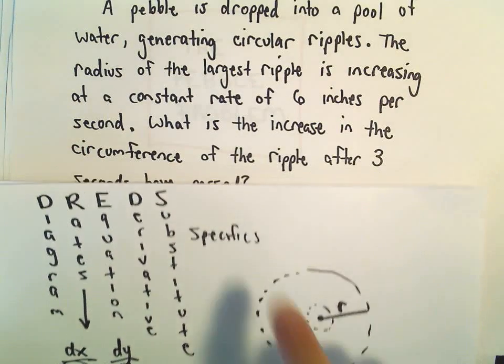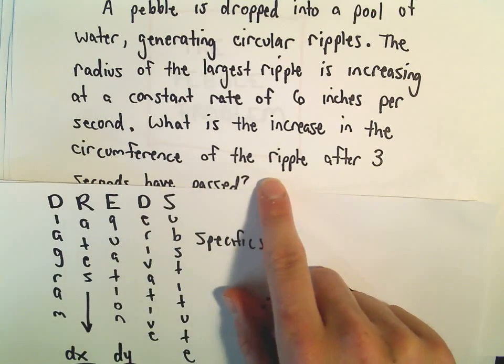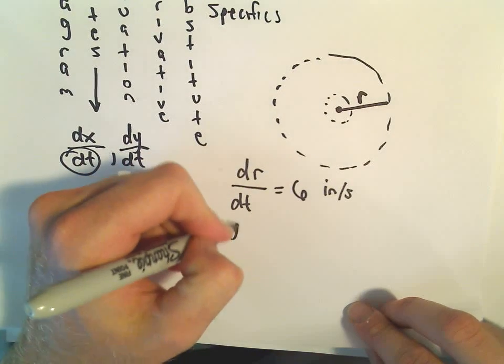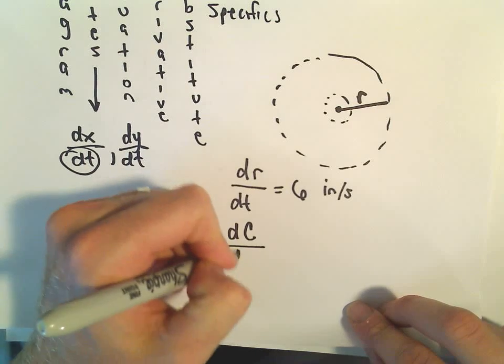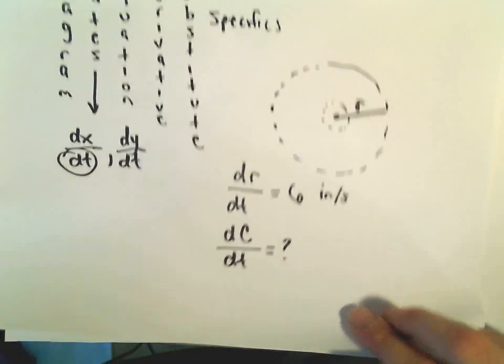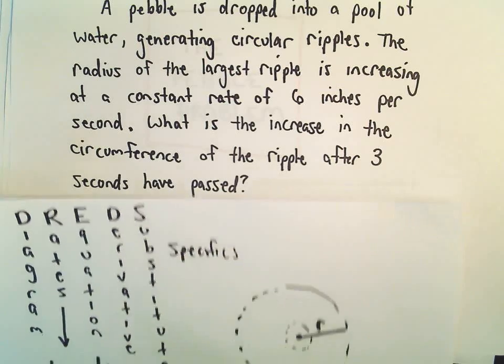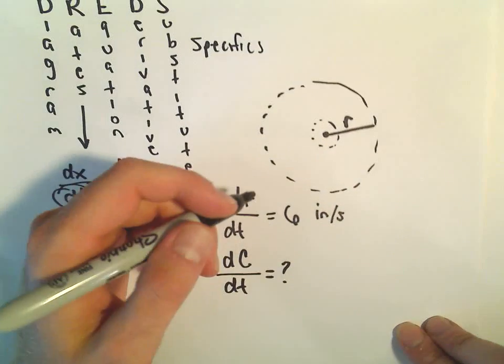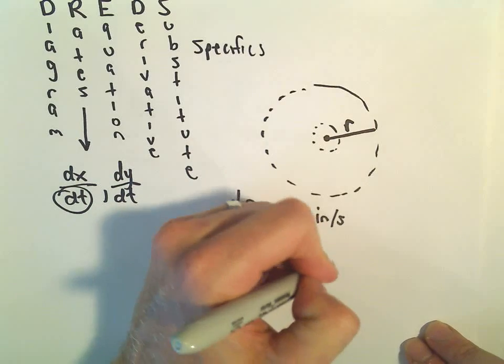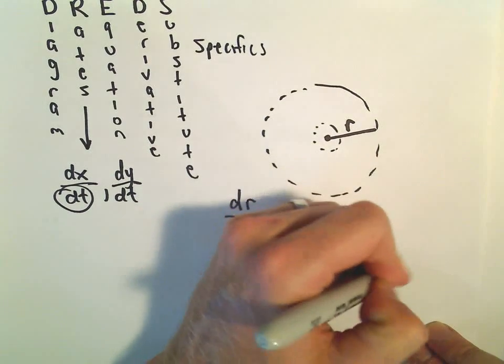Okay, we want to figure out what's the increase in the circumference of the ripple. So I'm trying to find the change in the circumference is what I want to know. I want to know the change in the circumference after 3 seconds have passed. So basically, we want to figure out that when t equals 3.